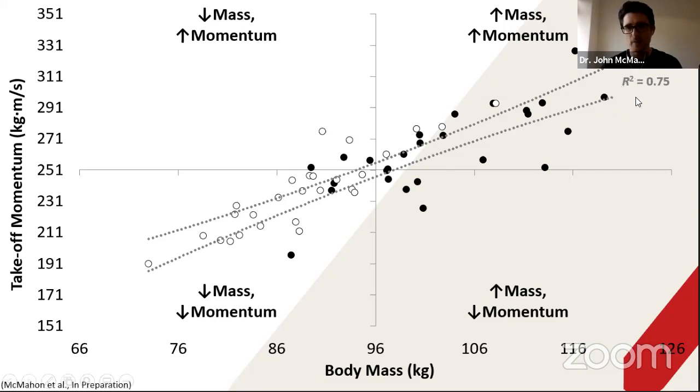75% of the takeoff momentum scores are explained just by the athlete's body mass. The remaining 25% is explained by their takeoff velocity.